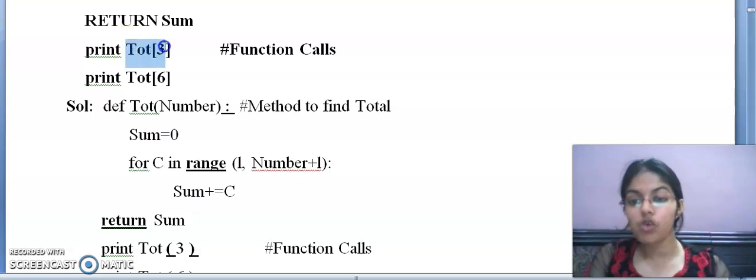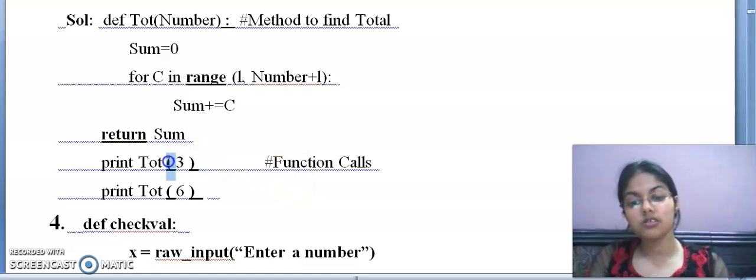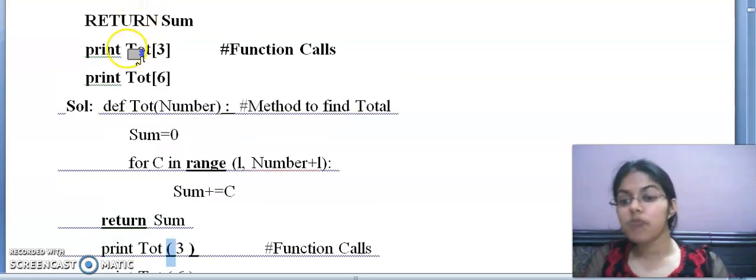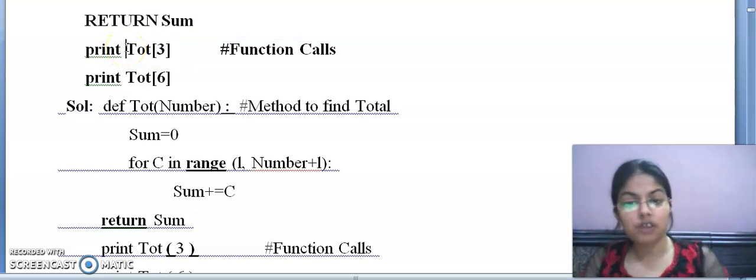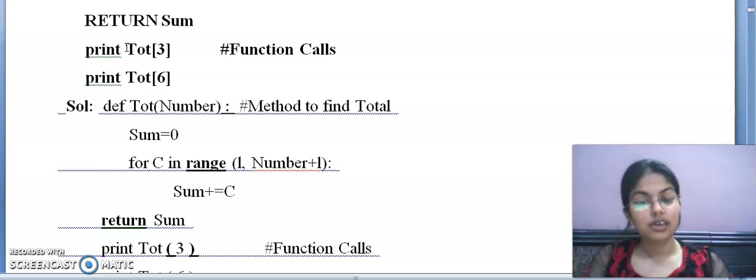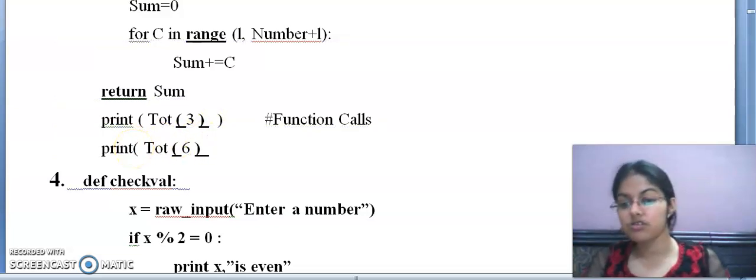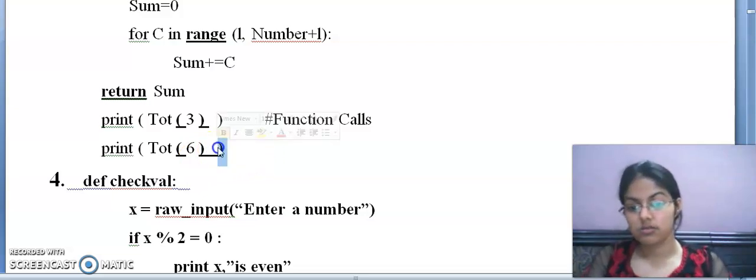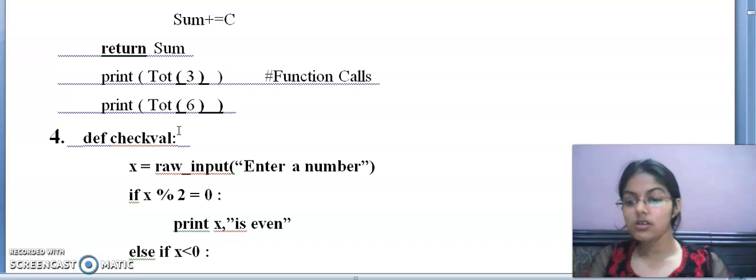Next, print Tot(3). See, check the brackets now. This is a function call statement. You know for the function call, these parentheses are used. One more thing: up to Python 2.7 version, print was not a function. Print was a statement. So you may see in some books or videos that print has no brackets. That means they are following the older version. But in your course, 3 point above version is there, so we will use brackets. Similarly for the next statement also, print is a function. These brackets are not used in function calls here.